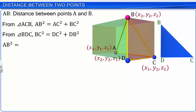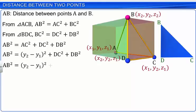Next, we realize this relation with the coordinates. As we can observe, length AC is given by Y2 minus Y1. Similarly, length DC is given by X2 minus X1 and DB is given by Z2 minus Z1. Hence, the distance between any two points is as shown.